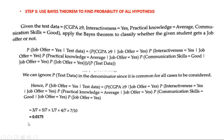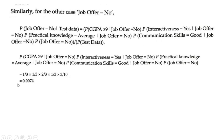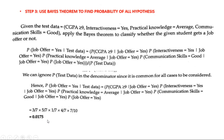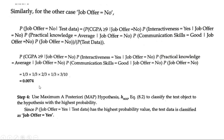Step 4: use the maximum a posteriori hypothesis (HMAP) to classify the test object to the hypothesis with the highest probability. Probability of job offer = yes for the test data is 0.0175, and for no it is 0.0074. Since 0.0175 > 0.0074, the test data is classified as job offer = yes. This means the student is going to get the job offer. That's it for today's session — any doubts please let me know in the comment box, thank you, and please subscribe to the channel.